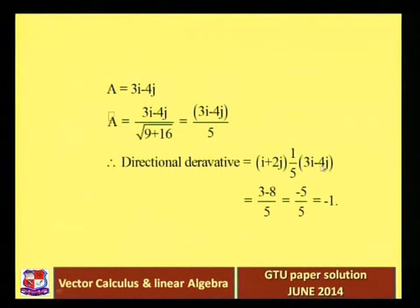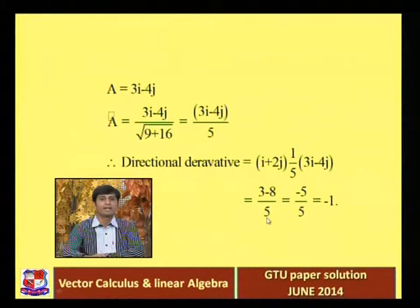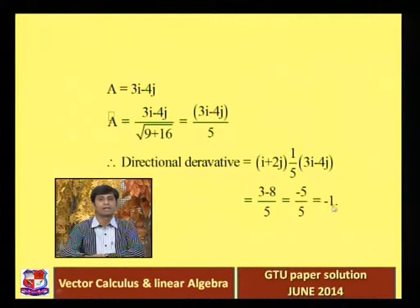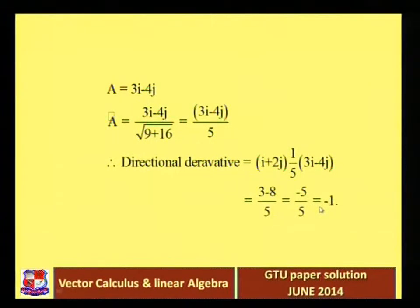2 into minus 4 is minus 8, so 3 minus 8 divided by 5 gives minus 5 divided by 5, and finally you get minus 1. So this is the answer: minus 1.